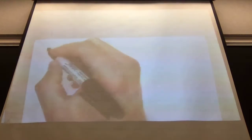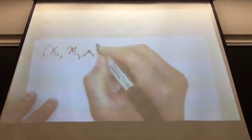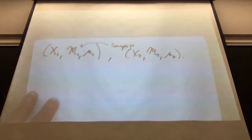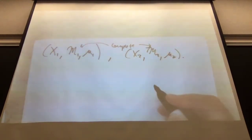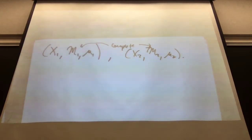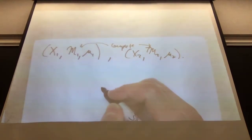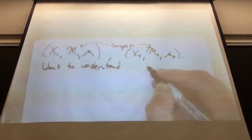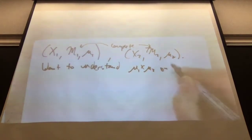Here's the situation. You have two measure spaces: X_1 with its complete sigma algebra and measure — I want this to be complete, all sets of measure zero are measurable and have measure zero — and another one, X_2. We want to understand what is meant by mu_1 cross mu_2 on X_1 cross X_2.